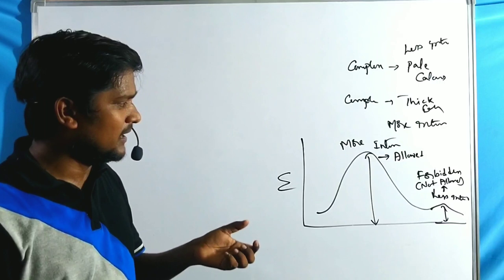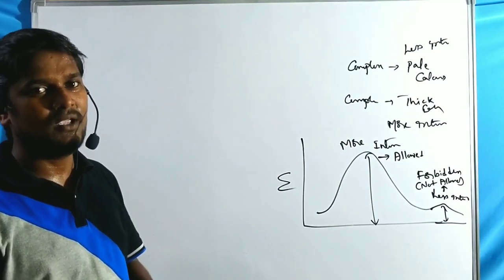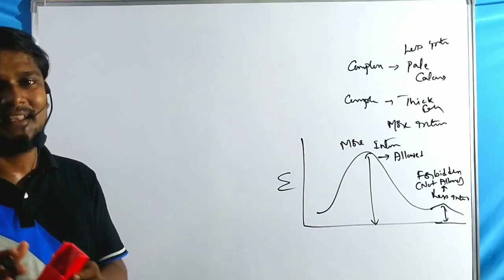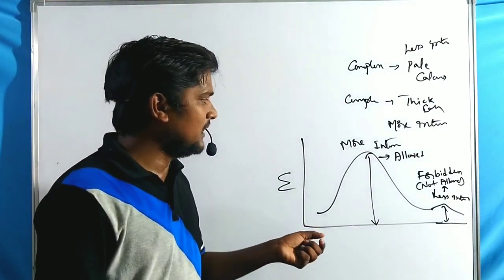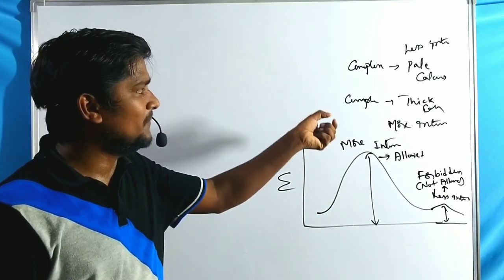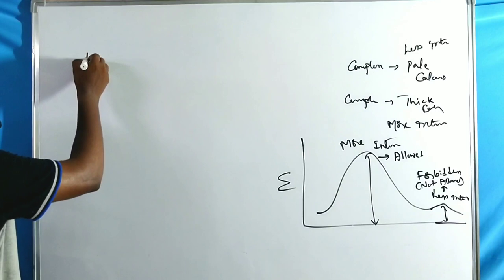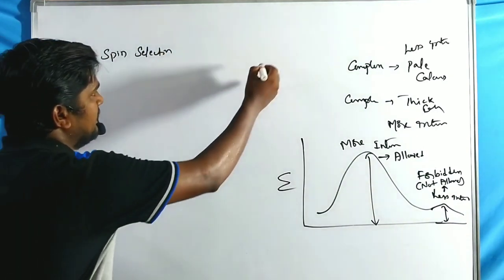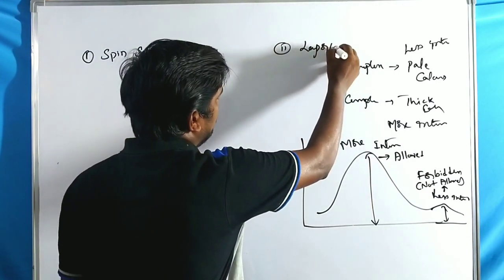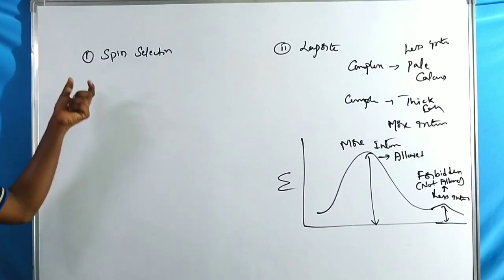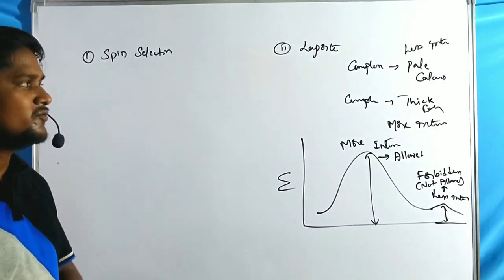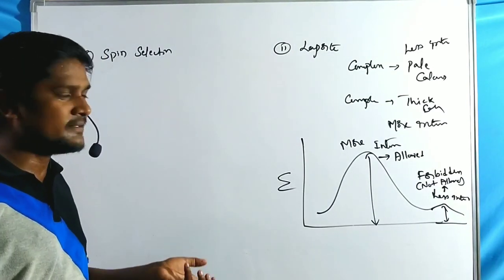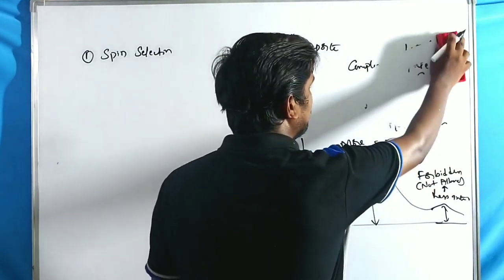We classify complexes as thick or pale, meaning more intense or less intense, using two terms: spin quantum number and azimuthal quantum number. With the help of two selection rules — one is the spin selection rule and another is the Laporte selection rule — we classify which complex has which type of transition, either more intense or less intense.